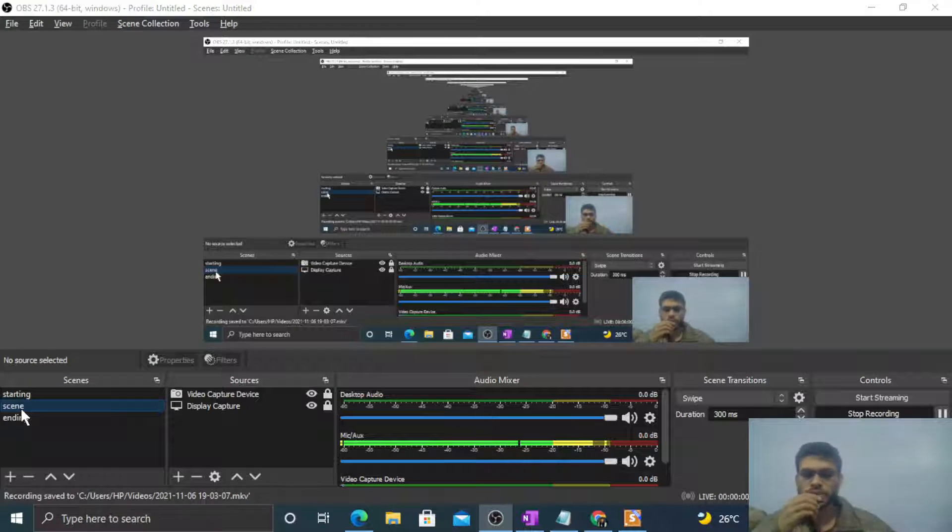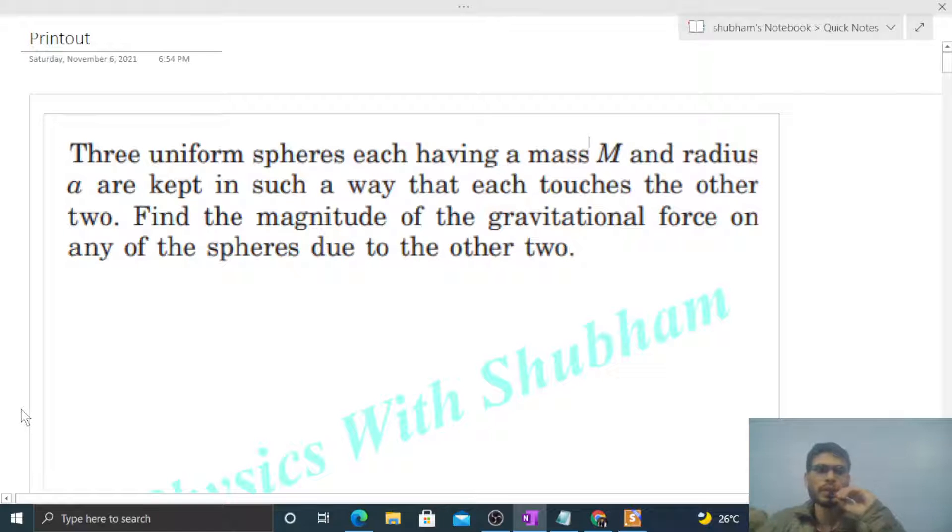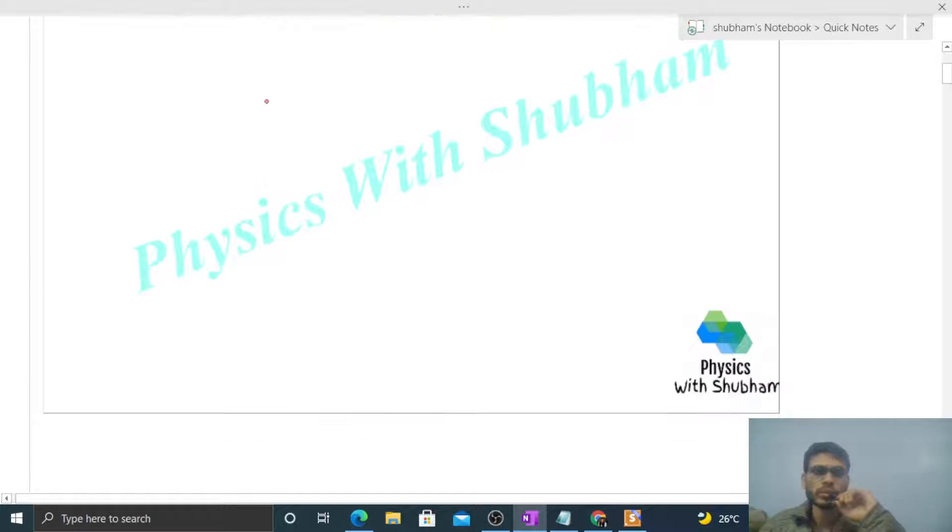Okay, hi everyone. Today let's discuss this interesting problem. It says: three uniform spheres, each having a mass capital M and radius a, are kept in such a way that each touches the other two. Find the magnitude of the gravitational force on any of the spheres due to the other two.